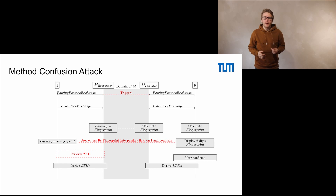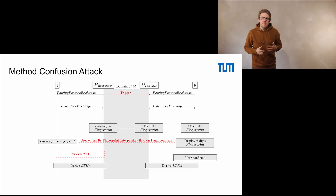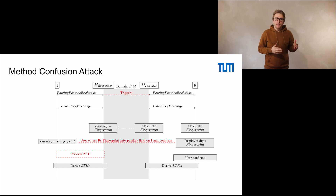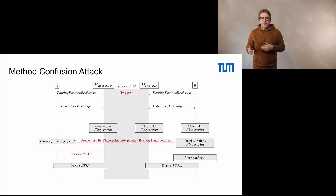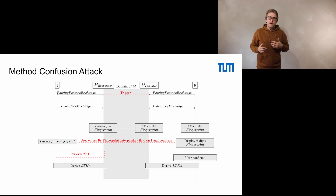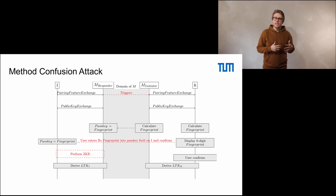Of course this is not fine, so let me show you now how we exploited the method confusion. Since interface negotiation is not secured, an attacker is able to force two devices into different pairing methods. As shown in this slide, the attacker performs a pairing via passkey entry on the left side with device A — this leads to device A prompting the user to input a six-digit value. On the right side, the attacker performs a pairing via numeric comparison with device B, where device B calculates the fingerprint and displays it as a six-digit value. The user then transfers this fingerprint and puts it into device A, where it is expected to be a passkey kept confidential.